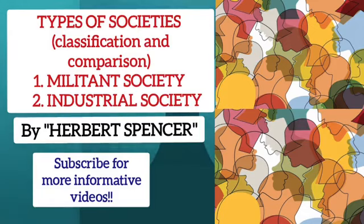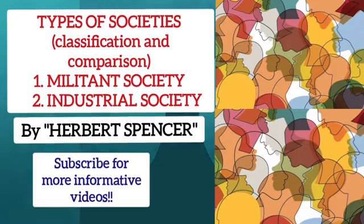The second type of society according to Spencer is the industrial society. The concept of industrial society refers to that form of society in which industrialization and modernization have occurred. The general term 'industrial society' originates from Saint-Simon, who chose it to reflect the emerging central role of manufacturing industry in 18th century Europe, in contrast with the previous pre-industrial and agrarian society.